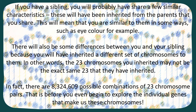If you have a sibling, you will probably share a few similar characteristics that have been inherited from the parents you share — such as your eye colour. There will also be some differences because you will have inherited a different set of chromosomes. The 23 chromosomes that you inherited may not be the exact same 23 that your sibling inherited. It's like putting 46 marbles in a bag and only picking out 23 — someone else picking next wouldn't get the same 23 as you.